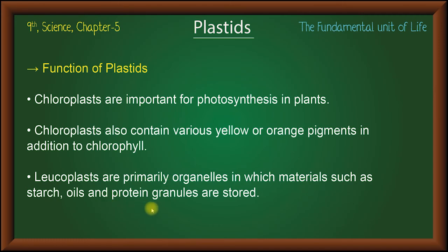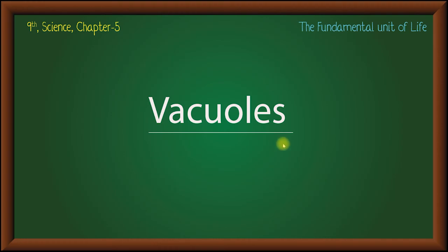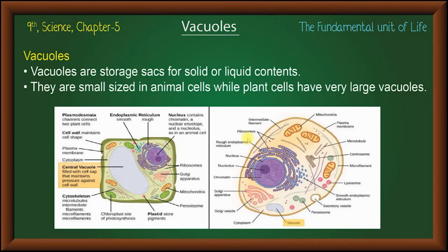The next organelles are vacuoles. Vacuoles are the storage sac of solid or liquid content. Just like a mitochondria is the powerhouse and lysosome is the suicidal bag, a vacuole is a storage sac — like a fridge.